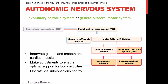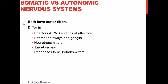All of the functions carried out by the autonomic nervous system are not things you have to consciously decide to do — your body does it subconsciously without you having to think about it. Since the ANS is the involuntary motor system and the somatic nervous system is our voluntary motor system, it's helpful to make comparisons between the two. Both are motor systems and both have motor neurons, but they differ in their effectors, pathway structure, neurotransmitters, target organs, and the responses of those target organs.